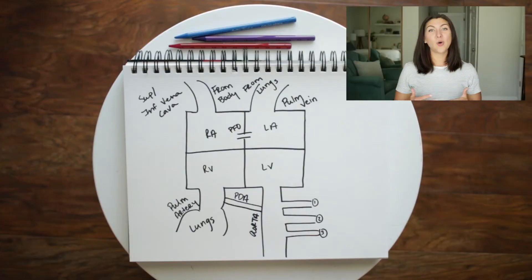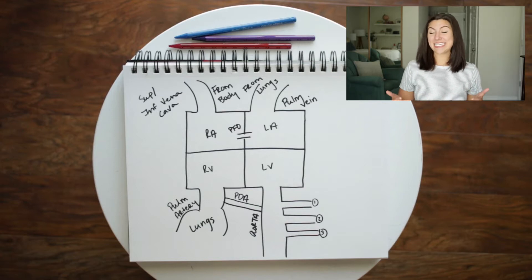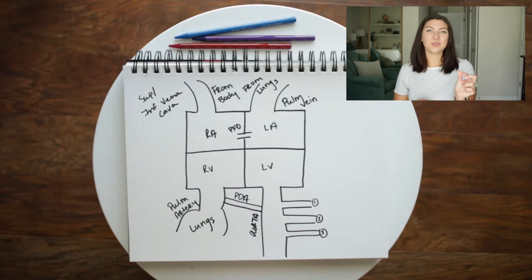I said earlier that blood on the left and right sides of the heart stays completely separate — and this is true in a normal adult. But in utero there are two different passageways, two shortcuts, that allow blood to get to the placenta more efficiently to be oxygenated. The first is a PFO, or patent foramen ovale — a passageway between the right and left atrium that closes shortly after birth. The second is the PDA, the patent ductus arteriosus, a pathway from the pulmonary artery to the aorta.